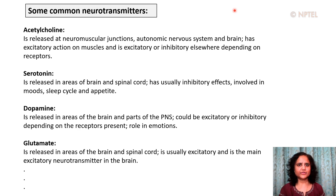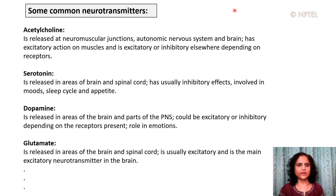Serotonin is another neurotransmitter released in areas of the brain and spinal cord; it usually has inhibitory effects and is involved in mood, sleep cycle, and appetite. Dopamine is released in areas of the brain and parts of the peripheral nervous system; it can be excitatory or inhibitory depending on the receptors present and has a role in emotions. Glutamate is released in areas of the brain and spinal cord; it is usually excitatory and is the main neurotransmitter present in the brain.